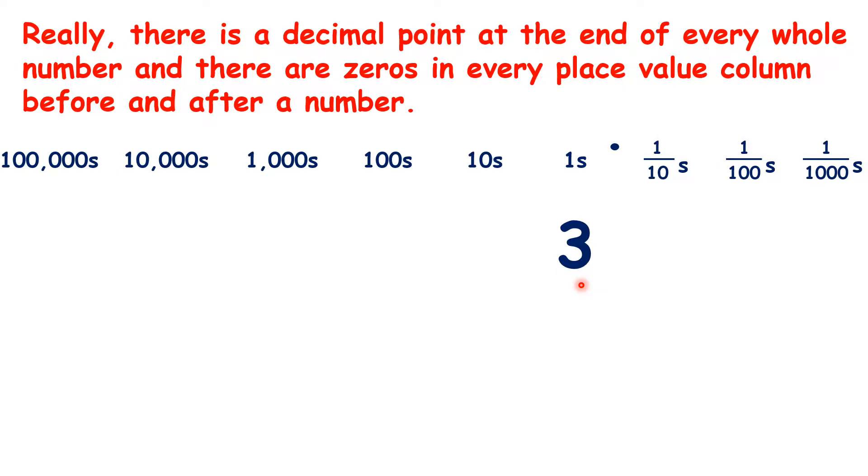So here we have the number 3, which we can see as written below the ones or units column. Then to the left, we have place value columns for our tens, hundreds, thousands, ten thousands and hundred thousands. And to the right, we have our decimal point and then our tenths, hundredths and thousandths columns.